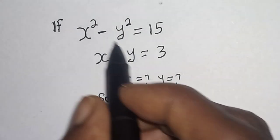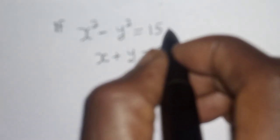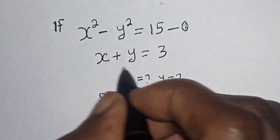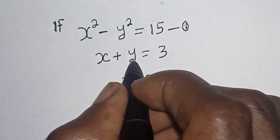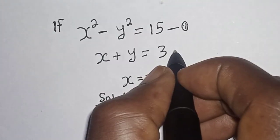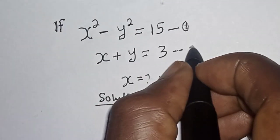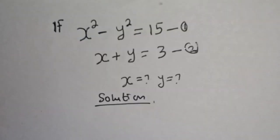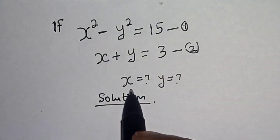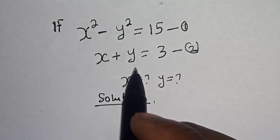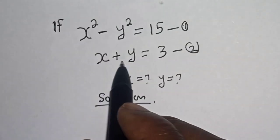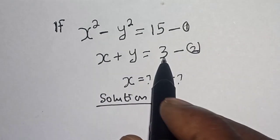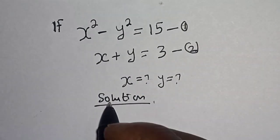We have s squared minus y squared is equal to 15 — this is equation 1. Then s plus y is equal to 3 — let's call this equation 2. We are looking for the value of s and the value of y. From equation 2, let's make either x or y the subject of the formula.